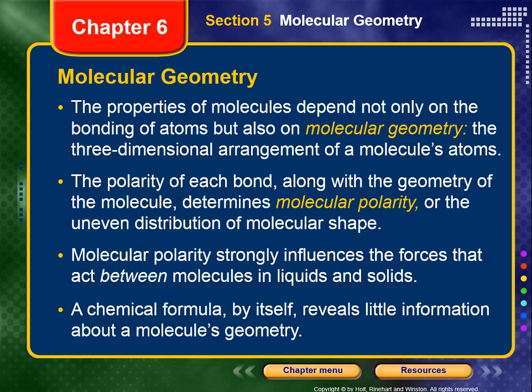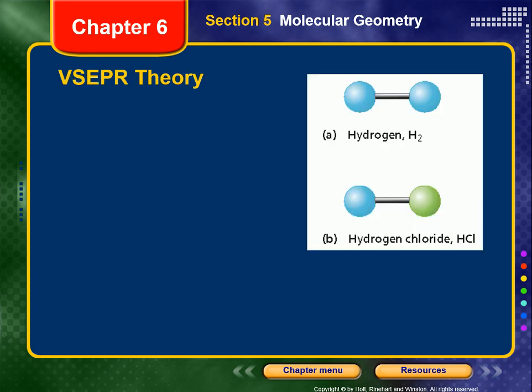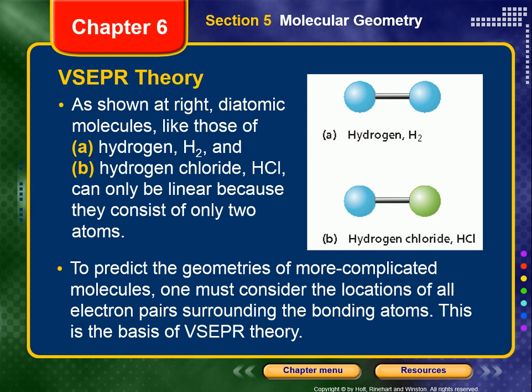Molecular polarity strongly influences the forces that act between molecules in liquids and solids. We want to remember that a chemical formula by itself reveals actually little information about a molecule's geometry. As shown, diatomic molecules like hydrogen (H2) or hydrogen chloride (HCl) can only be linear because they consist of only two atoms — you can't arrange them in space any different way. To predict the geometries of more complicated molecules, one must consider the locations of all of the electron pairs surrounding the bonding atoms.